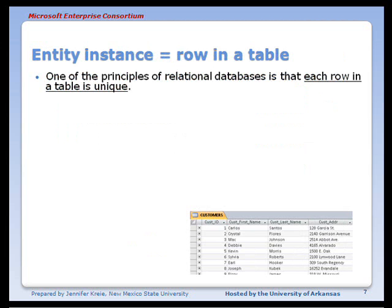It's one of the principles of relational databases that each row in a table is unique. That means the combination of values for the attributes or the values in that row in the columns will be unique for each row.